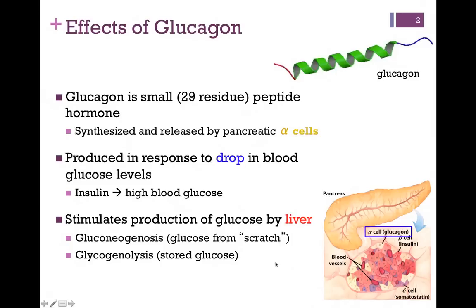Glucagon is in many respects the opposite of insulin. Remember, insulin signifies high blood glucose. Glucagon is produced in response to a drop in blood sugar levels, so it stimulates production of glucose by the liver. It stimulates glycogenolysis — release of stored glucose from glycogen — and gluconeogenesis, synthesizing glucose from scratch.